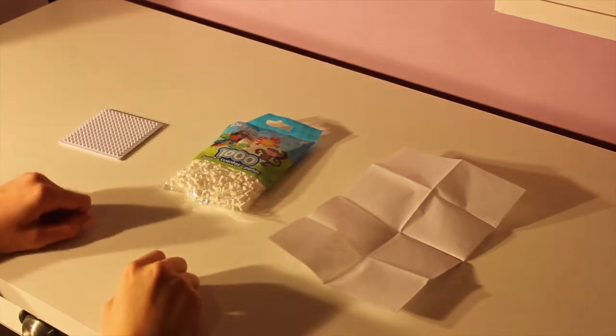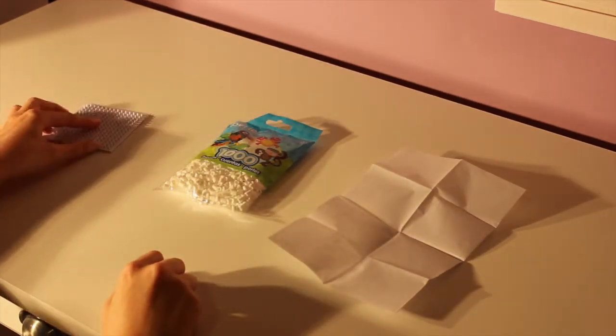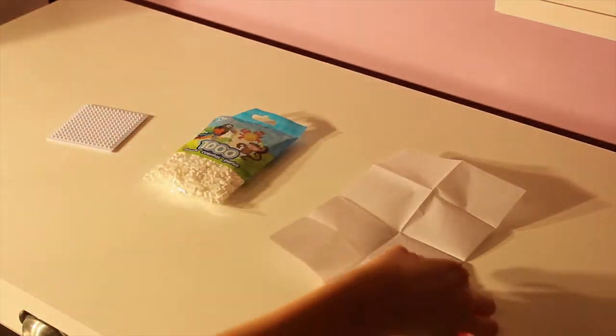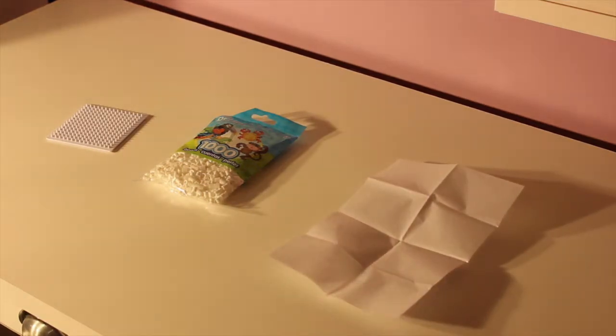So for this craft, you're going to need a pegboard to make your design on. You're going to need melting beads or perler beads, and you're also going to need some parchment paper. And then for our last step, you will need an iron. So let's get started.